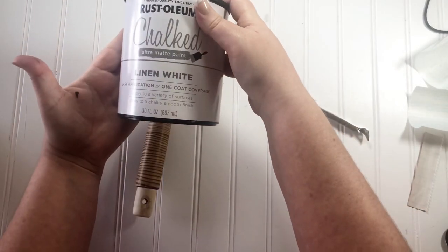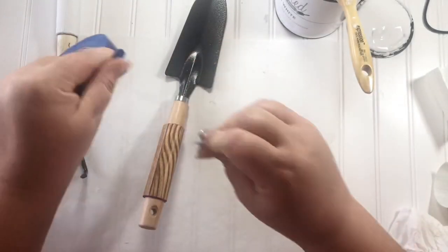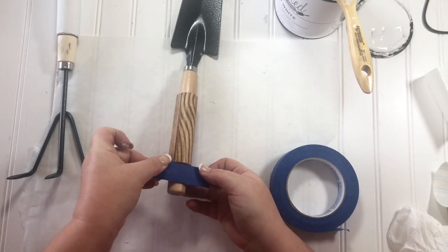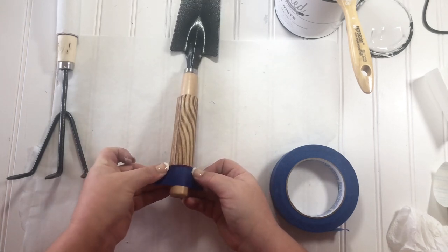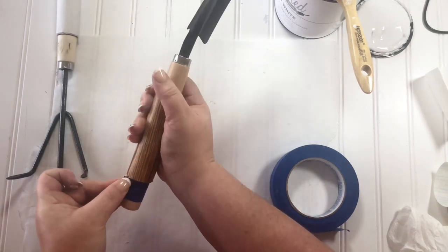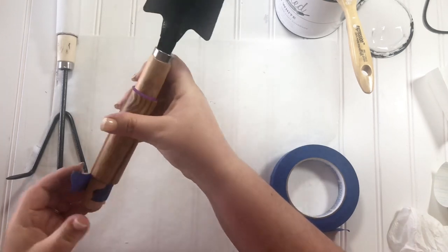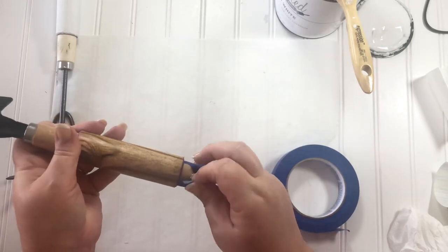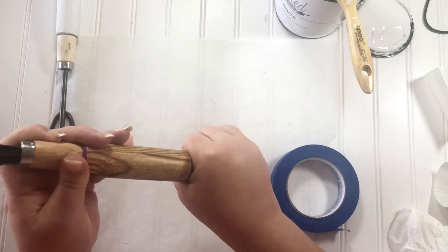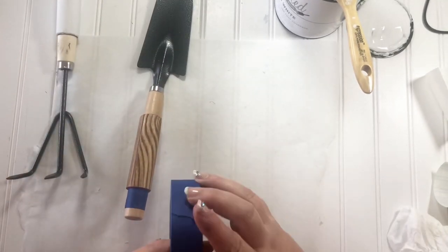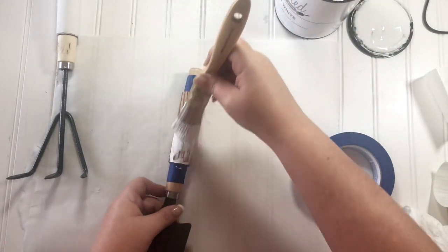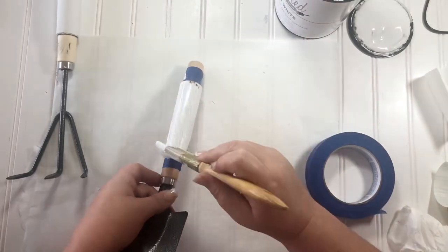Today I'm using Rust-Oleum Linen White chalk paint, and I'm going to use painter's tape to tape off around the ends of the fake wooden handle that I've made, so that the white paint just gets on where the contact paper is. You're probably wondering why didn't I just paint the purple with the white paint, and that's because it's made of some kind of spongy material and I really wanted to keep that wooden handle look. Then I used two coats of the chalk paint to cover the contact paper part of the handle.